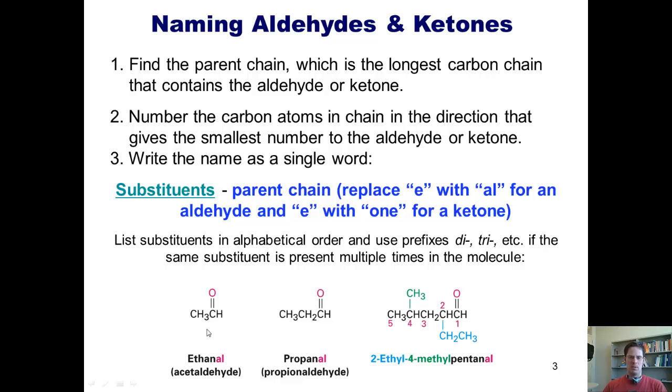Here are some examples. In this example, you'll notice that we have a two-carbon long aldehyde. A two-carbon long chain in IUPAC nomenclature is called ethane. Because this is an aldehyde, though, we replace the letter E at the end of the name ethane with the suffix AL. So this compound becomes ethanal.